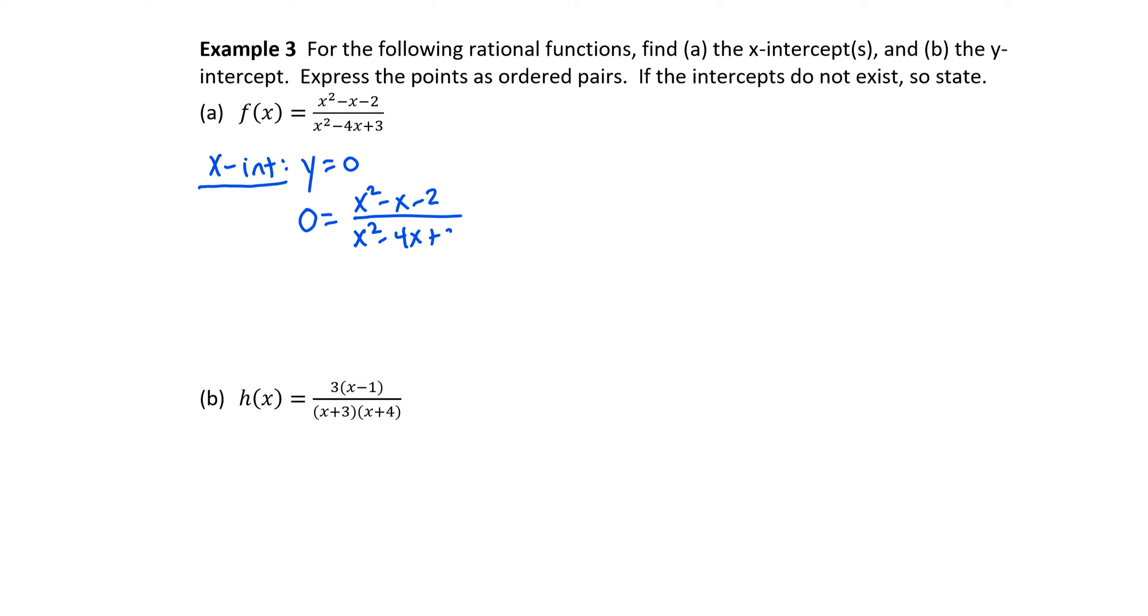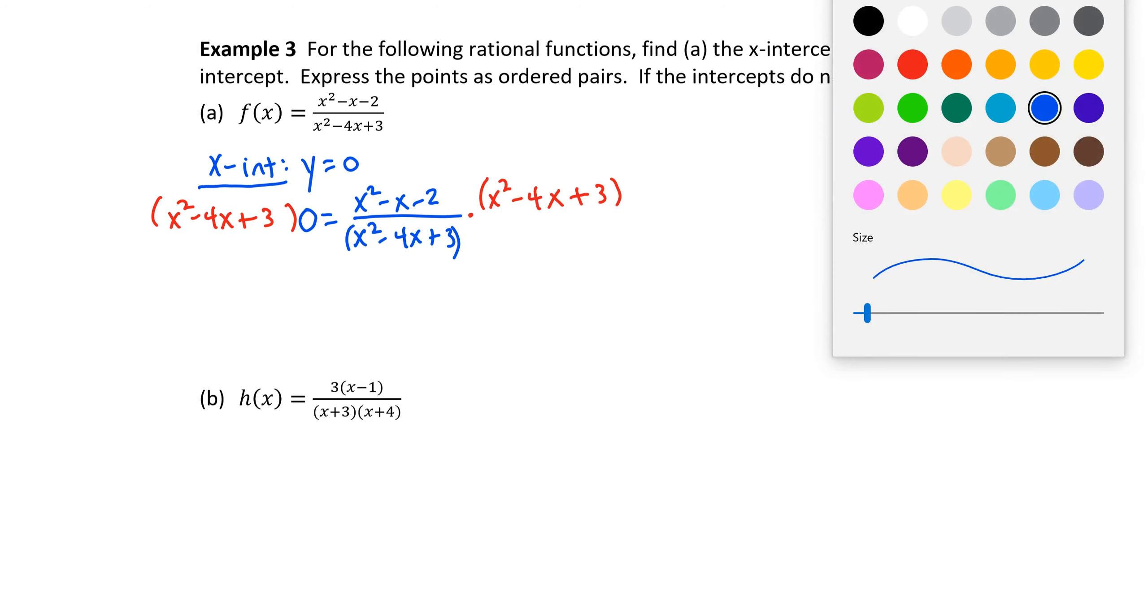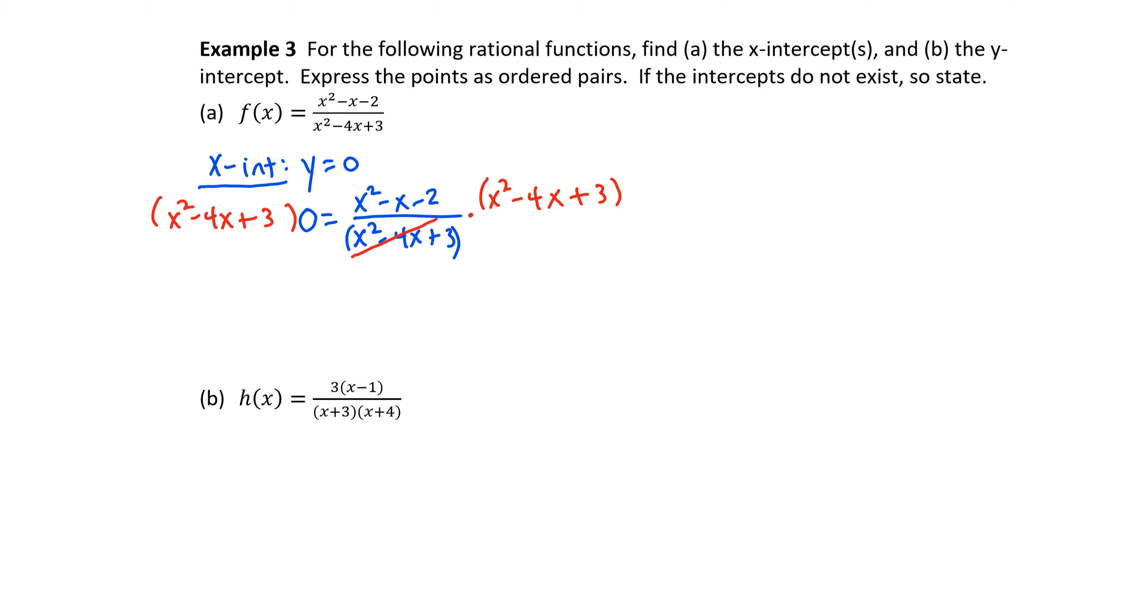It looks like sort of an intimidating equation to solve, but anytime we have a fraction in our equation, we can clear that fraction by multiplying both sides by the lowest common denominator. In this case, the lowest common denominator is the only denominator that we have. When we multiply both sides by this LCD, notice it completely cancels on the right side, and on the left side, the LCD times 0 equals 0. The equation that we end up with is simply the numerator equal to 0.